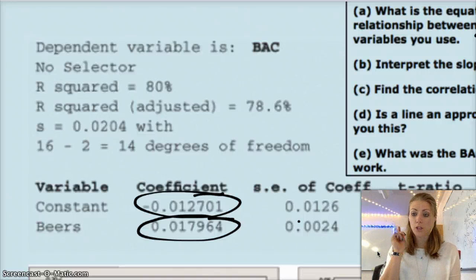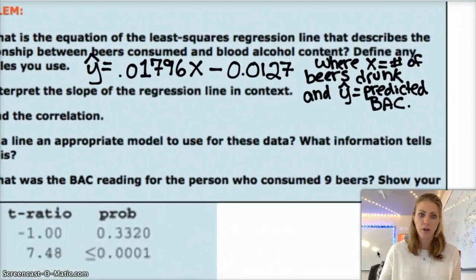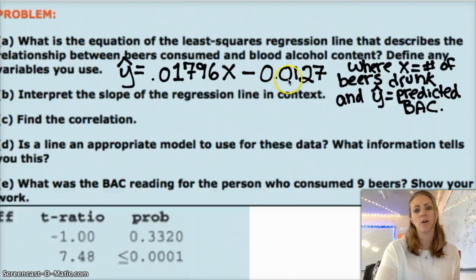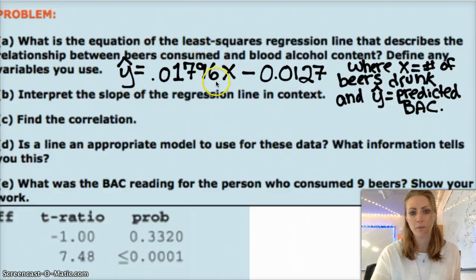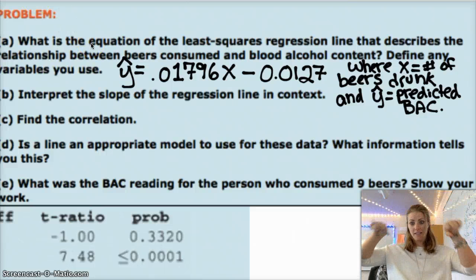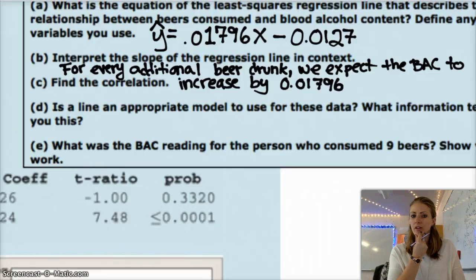And so you always, anytime, I mean, I probably have already said this a bunch, but anytime you're writing your equation for your line of best fit, or your least-square regression line, you have to define your variables. So for A, I wrote that y-hat equals 0.01796x minus 0.0127, but I define my variables here, where x equals the number of beers drunk, and y-hat is the predicted BAC. You can also replace x with just parenthesis beers and y-hat with BAC hat. It's another way to include context, but you always have to have context here.